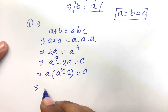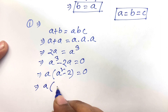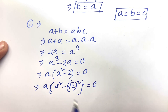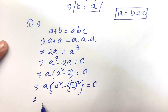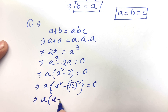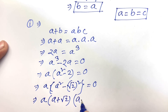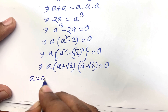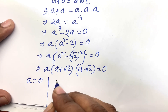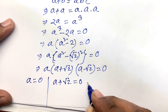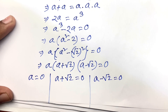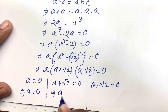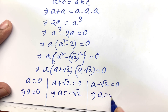I can say A squared minus the square root of 2, whole squared, equals zero. We know that square root 2, whole squared, is equal to 2. We know that A squared minus B squared equals A plus B times A minus B. So there are three terms: A equals zero, or A plus square root 2 equals zero, or A minus square root 2 equals zero. Therefore A equals square root 2 or A equals negative square root 2.